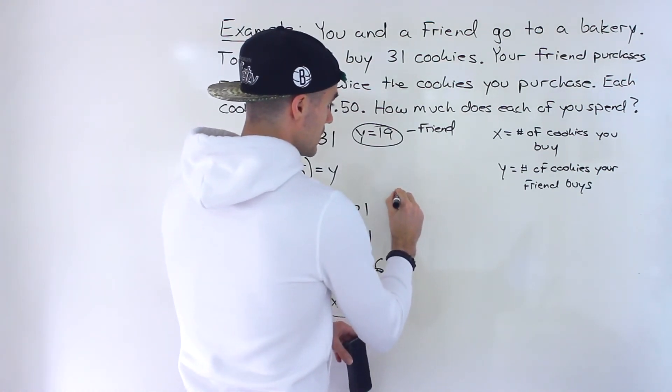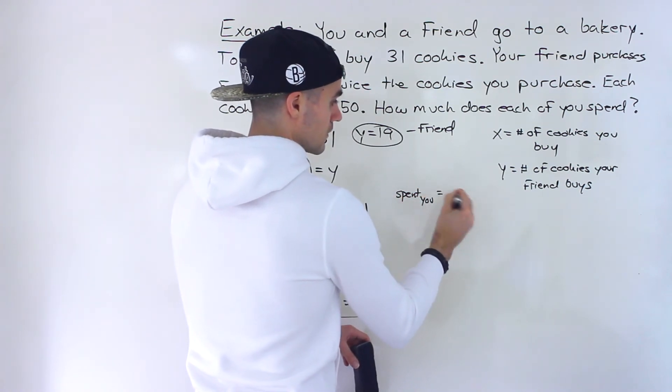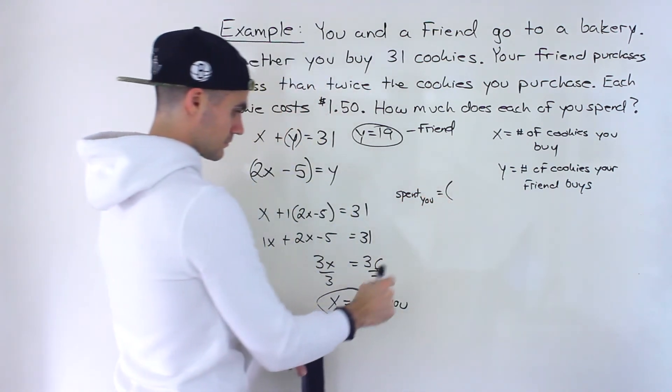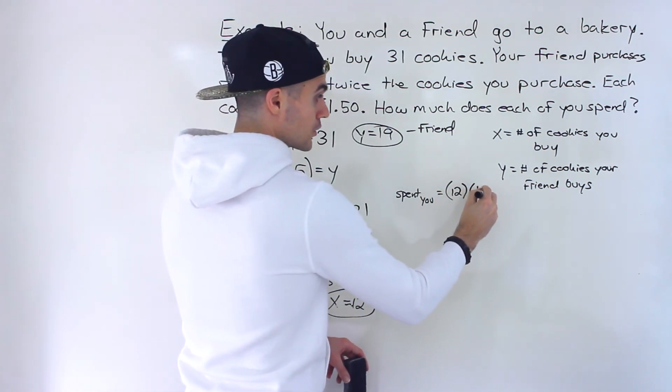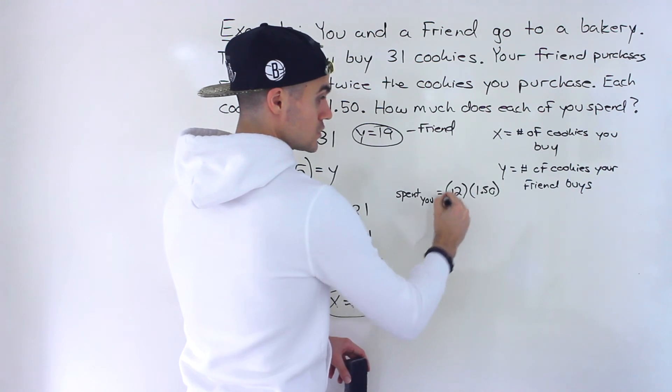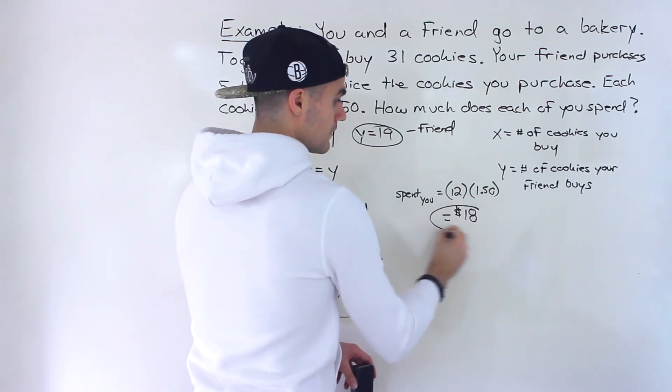so the amount spent by you, it would be the amount of cookies you buy, 12 times the price per cookie, 150, which would be $18. So that's the amount that you spend.